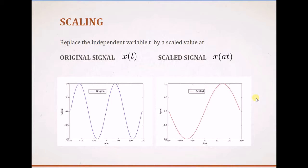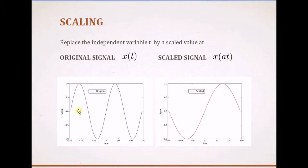For the scaling property, the original signal x(t) can be scaled by replacing time t with a scaled version, that is a times t, where a is the scaling factor. In this example, we see a sinusoid and t is replaced by t/2 — that is, sin of a function of t becomes sin of a function of t divided by 2. The new signal is a stretched version of the original signal, and we can see that the wavelength actually doubles.